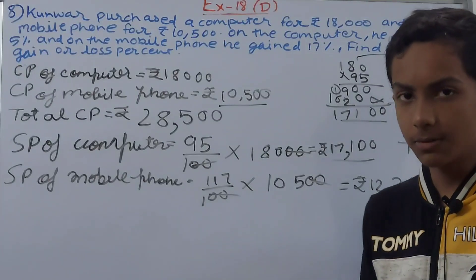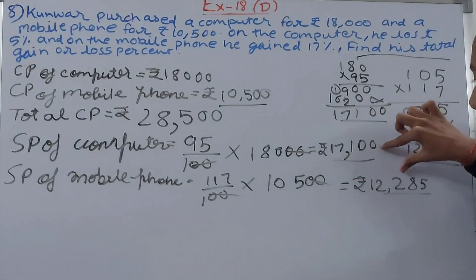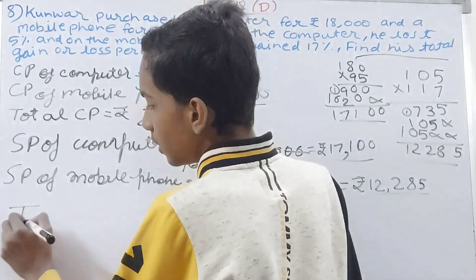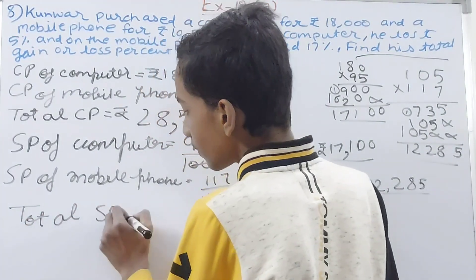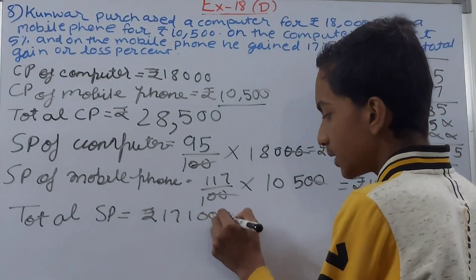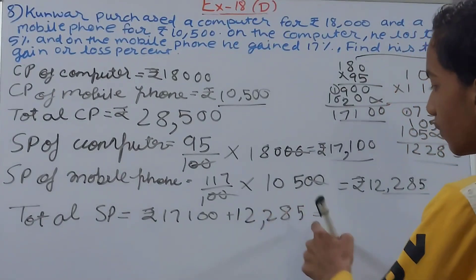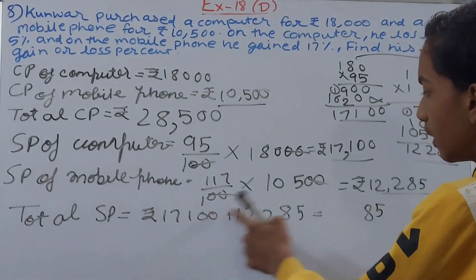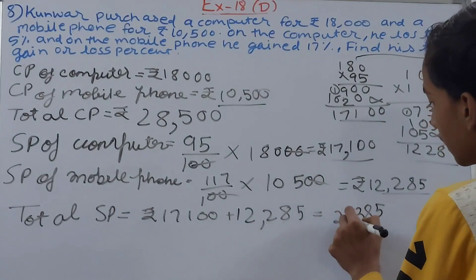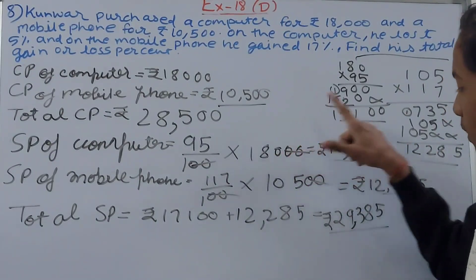Now we need the total selling price, which is the combination of both selling prices. Total SP = SP of computer + SP of mobile phone = ₹17,100 + ₹12,285 = ₹29,385. So total SP is ₹29,385 and total CP is ₹28,500.